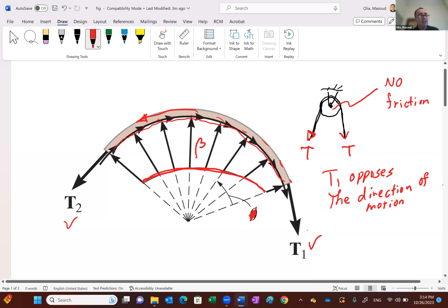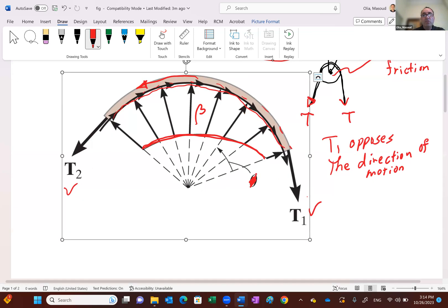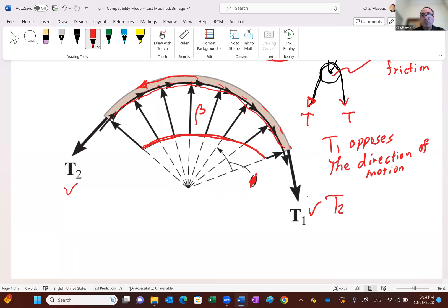So now it turns out that, if we say coefficient of static friction is mu s or coefficient of kinetic friction is mu k if it's moving, it doesn't matter. We just call it mu. Then what's the relation between these two tensions? It turns out that the ratio of tension T2 to tension T1 is equal to e to the power mu times beta.